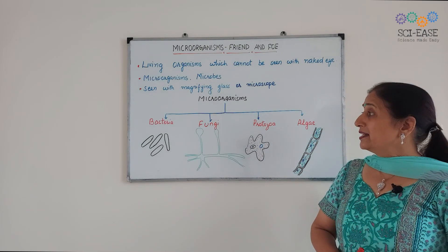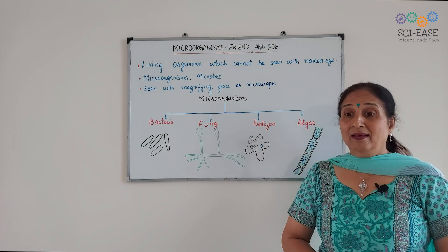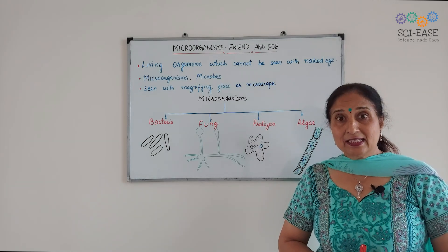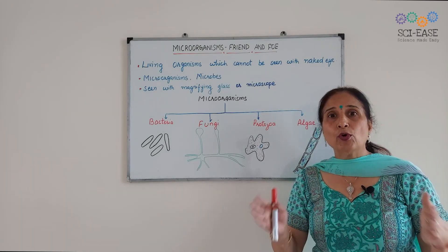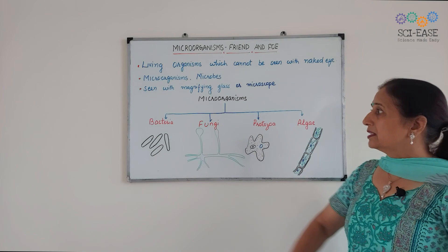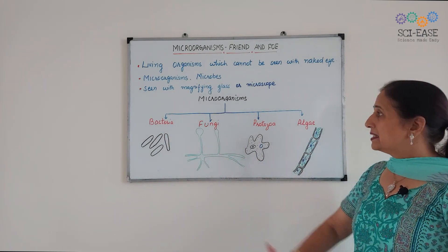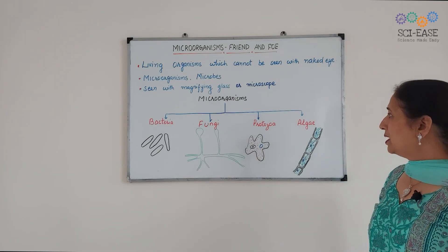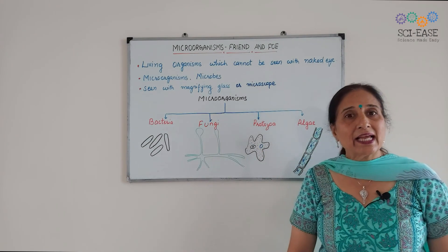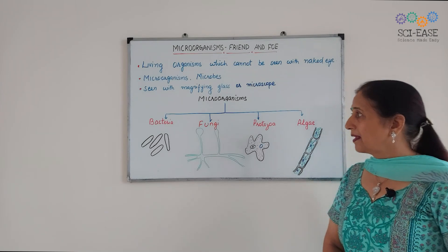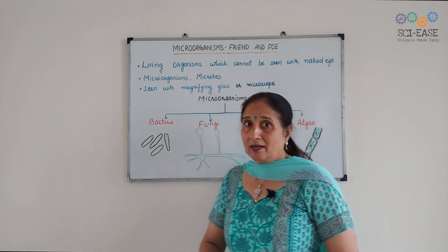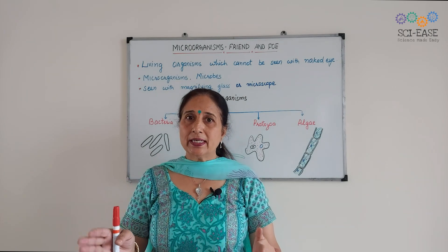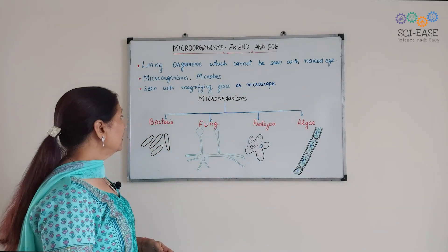Micro-organisms are of different categories. They are divided into mainly four categories. The first one is bacteria, second is fungi, third is protozoa, and the fourth one is algae. These are the four major types of micro-organisms.